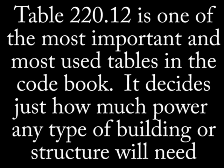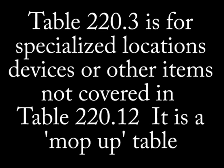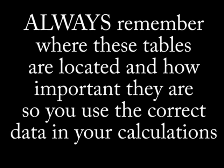Table 220.12 determines just how much power is required for each type of building you're doing calculations on. Note that in Table 220.12 the term 'dwellings' is a very broad term and is the basic term for most calculations unless otherwise noted. You should also be aware that calculations for specialized locations or special devices can be found in Table 220.3. Remember where these tables are in the code book because they will probably be needed on any type of electrical test you take.